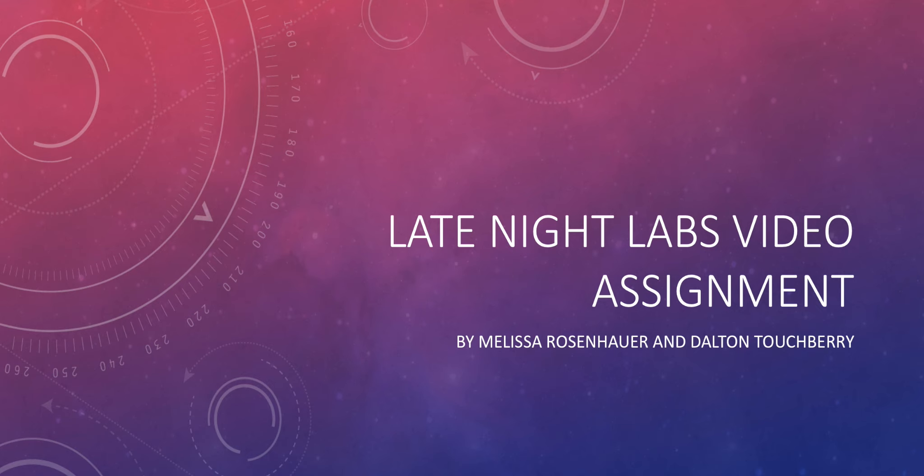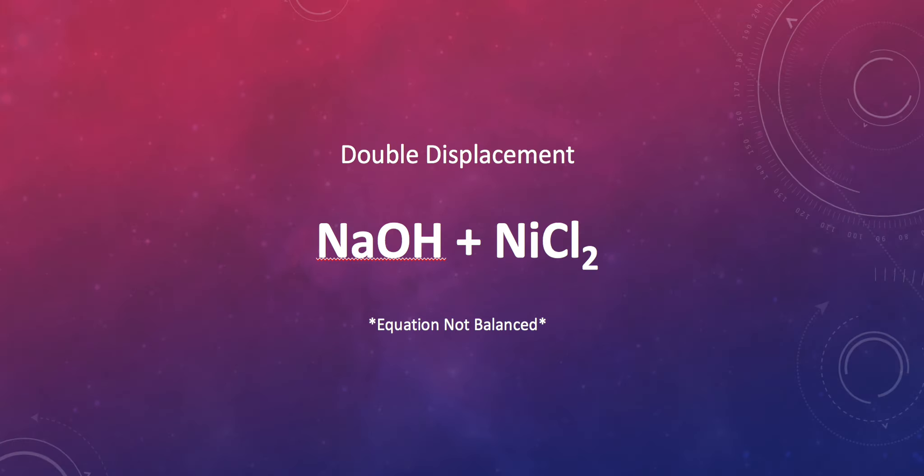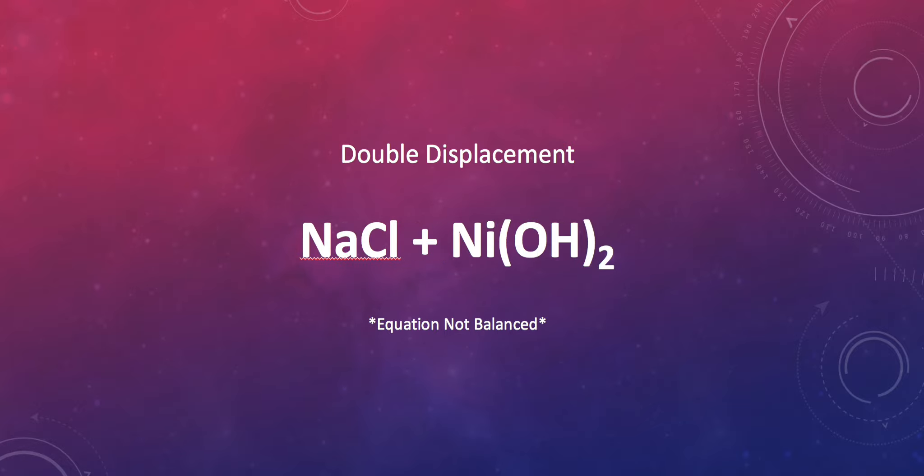Today we will be performing the chemical reaction between sodium hydroxide and nickel chloride. The reaction is a double displacement reaction. In a double displacement reaction, the products are the same cations with the anions from the reactants switched.